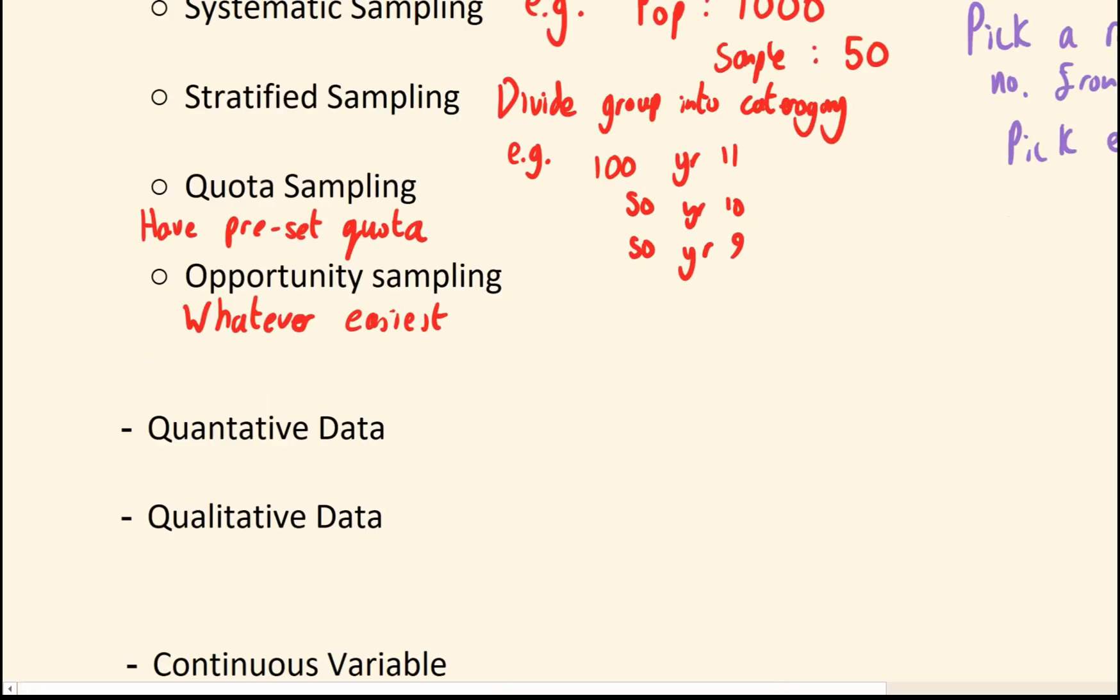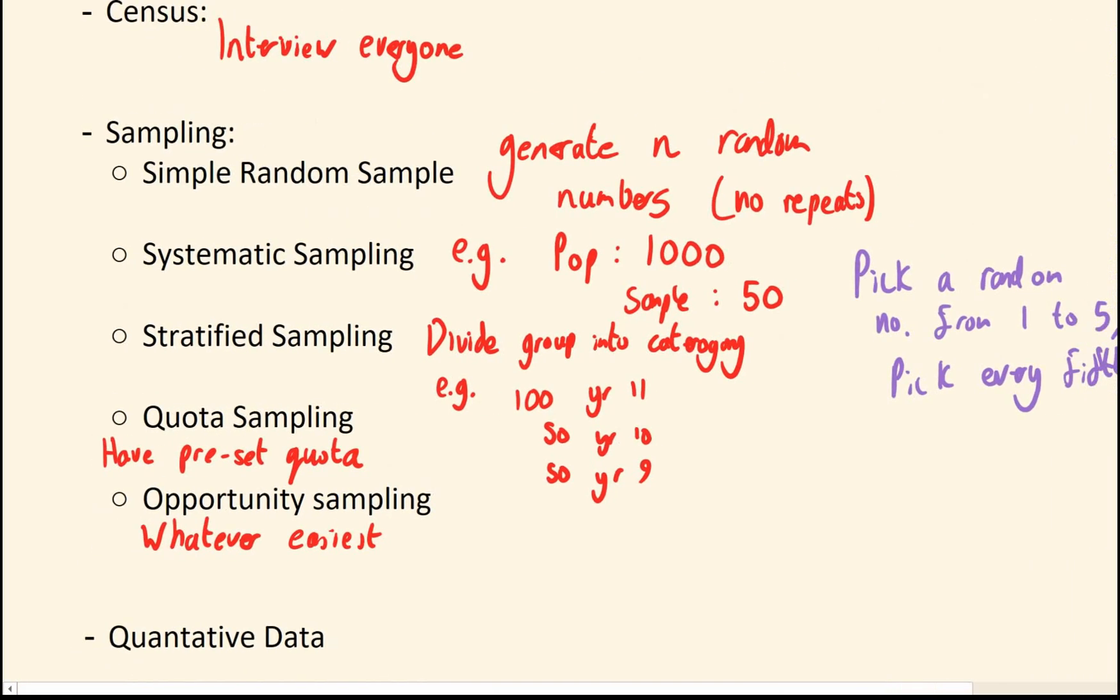Those are your sampling methods. You're often asked to say which are random. I think Edexcel agreed that these three are random. Everyone should be equally likely as everyone else to be selected. That's what random means. And the last two are not random.